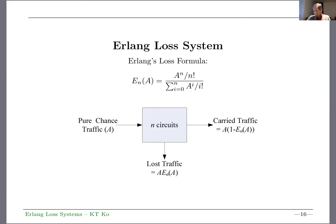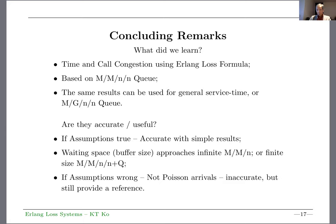With that, we come to the second last slide. You know the Erlang Loss probability, you have the pure chance traffic A, and n circuits. The carried traffic by these n circuits is A times (1 minus E_n(A)). The lost traffic is A times E_n(A).